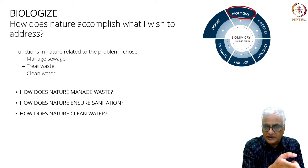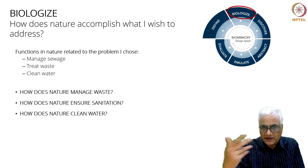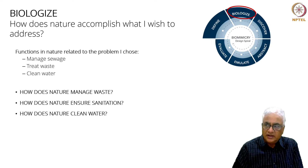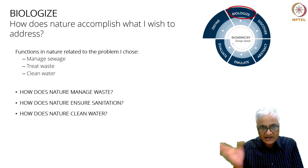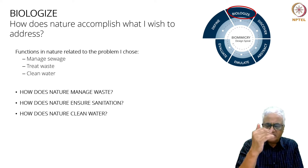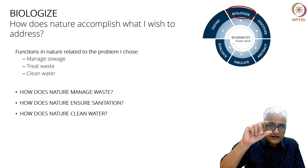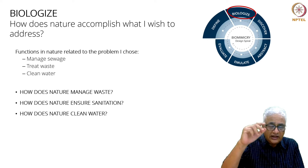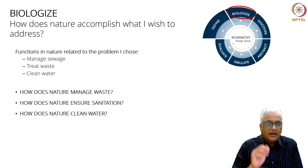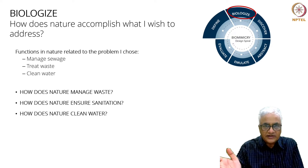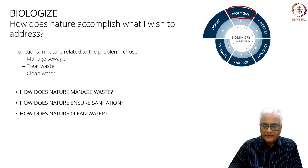All three functions have a verb in them, which is an important aspect of a function. So the question she asked — how does nature manage waste? — falls in so logically. The more important skill is finding out what is the function that you want to accomplish. How does nature ensure sanitation? How does nature clean water?